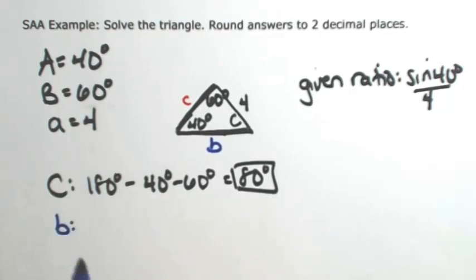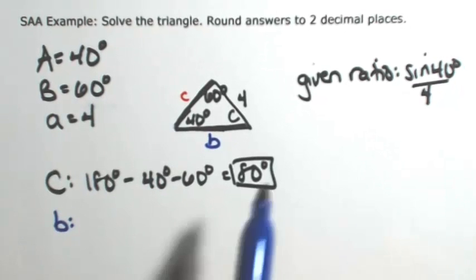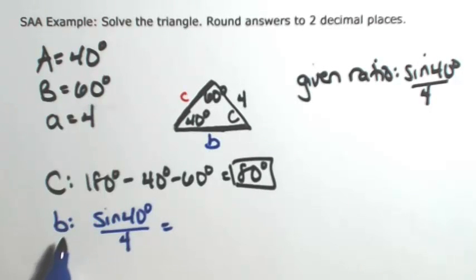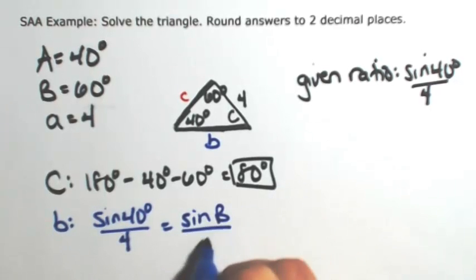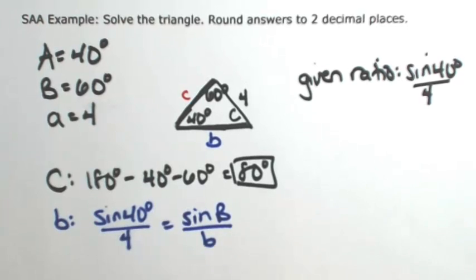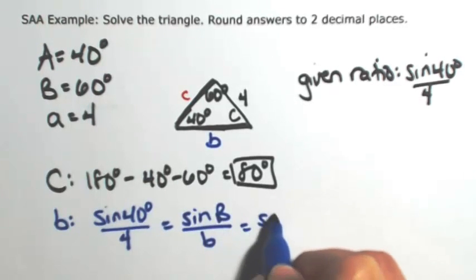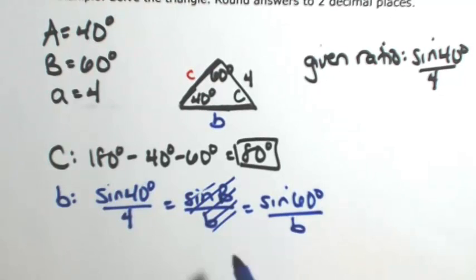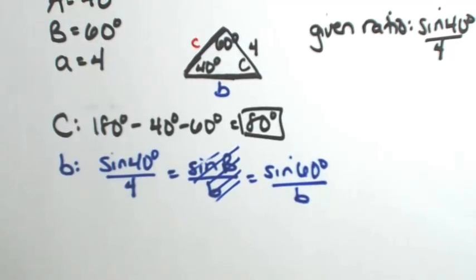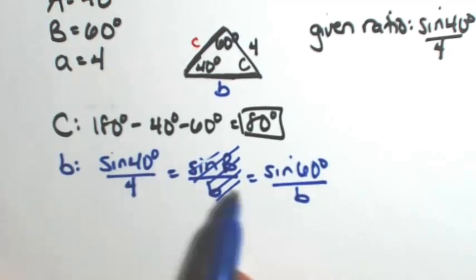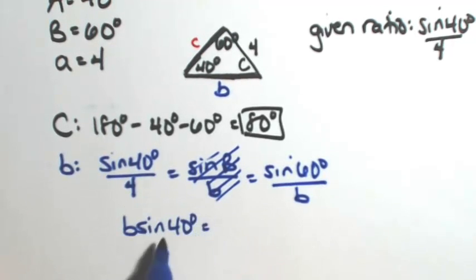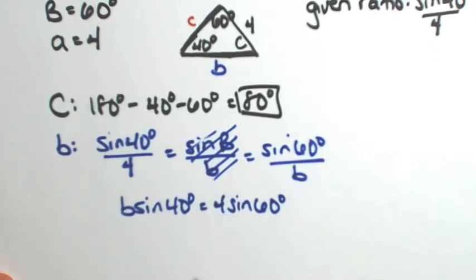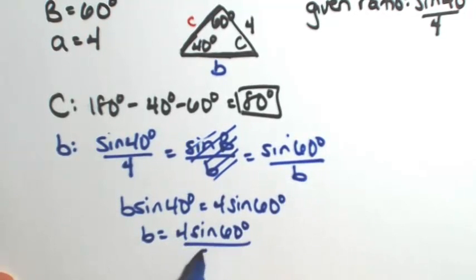Let's find side b using the given ratio of sine 40 degrees over 4. This is proportionate with sine of angle B over side b. Angle B is given as 60 degrees, so sine of 60 degrees over b. Now I have an equation where I can solve for b. Cross multiplying, b sine 40 degrees equals 4 sine 60 degrees.